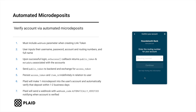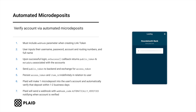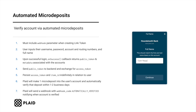The on-success callback within PlaidLink will return a public token in addition to metadata associated with their accounts. You'll then send this public token to your backend, where you will exchange it for an access token via our token exchange endpoint. For this flow, the access token is not immediately ready to retrieve users' auth data, and if you try to make a request to Plaid's auth endpoint, you'll receive a product-not-ready error.